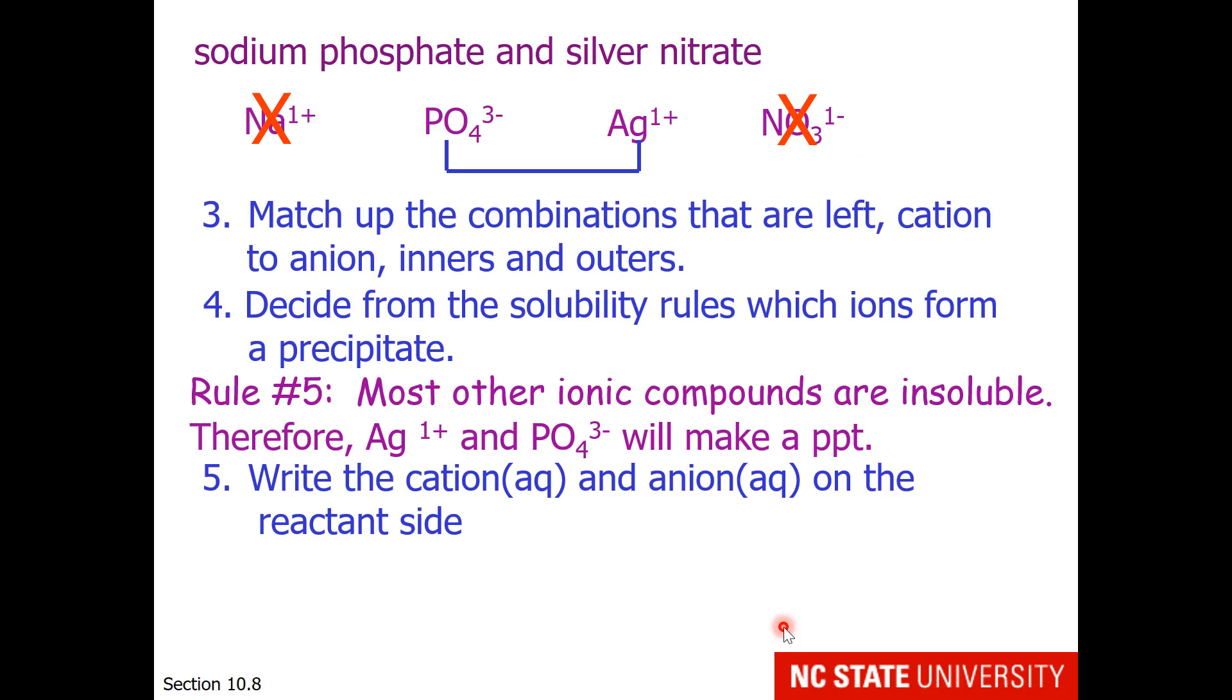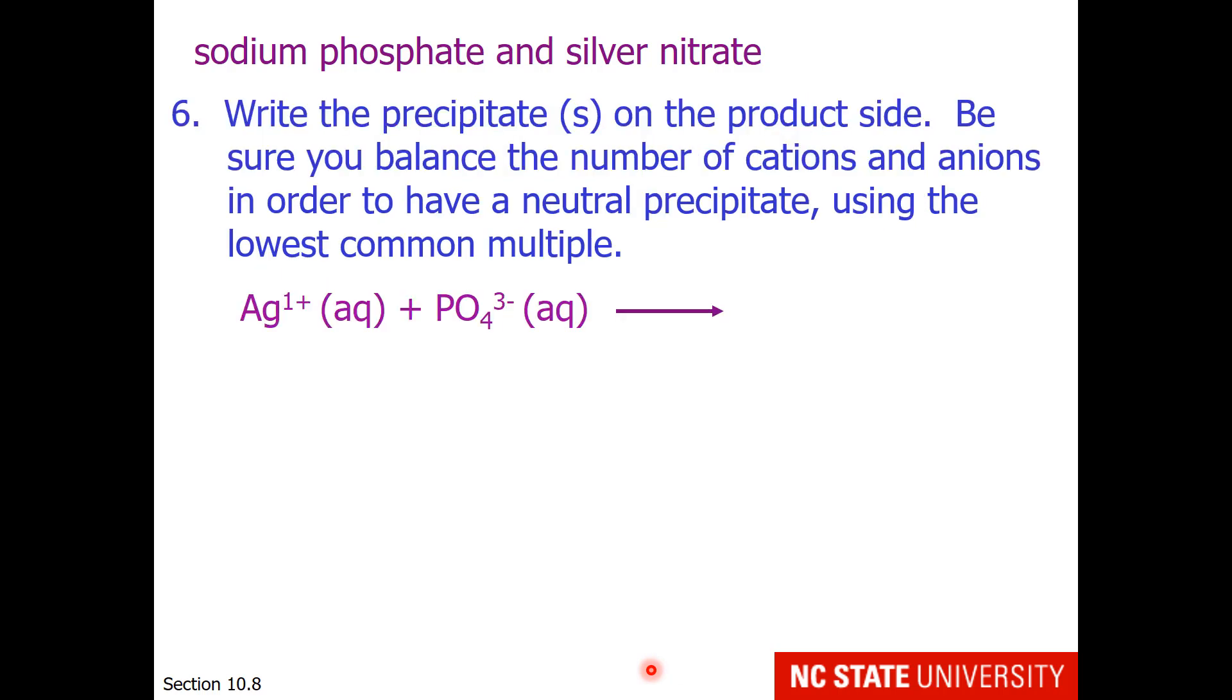So we'll write the cation and anion on the reactant side in the aqueous state. Now we'll need to write the precipitate on the product side, and of course we will crisscross the charges to make sure that we have a neutral solid. So we need 3 silver ions to match 1 phosphate anion.